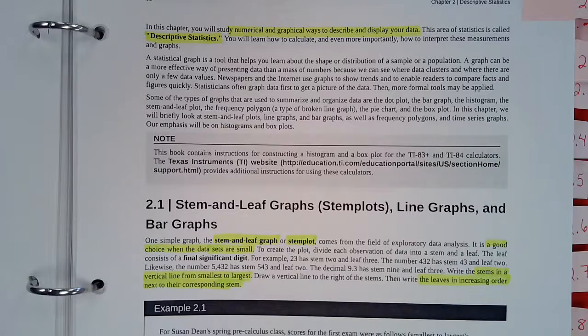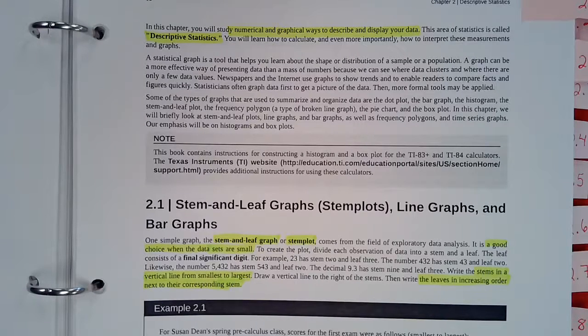Alright, so in section 2.1 we have our stem and leaf plots that we're going to talk about, our line graphs and our bar graphs. So the stem and leaf plot is a pretty straightforward way to represent data. So it's a good choice when your data sets are small, and we're going to use the stem, which is the larger part of the number, and it's going to correspond to the leaf. This is a way for us to organize data from smallest to greatest fairly quickly.